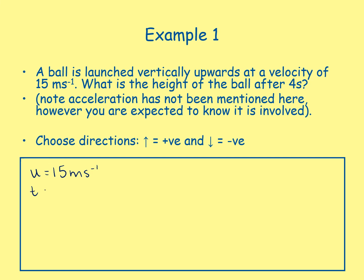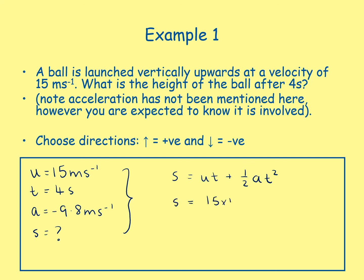Acceleration is −9.8 m/s² (negative because it acts downward). We want to find the displacement s. Using s = ut + ½at²: s = 15 × 4 + ½ × (−9.8) × 4² = 60 − 78.4 = −18.4 metres. The negative answer indicates the ball is 18.4 metres below the launch point after 4 seconds.